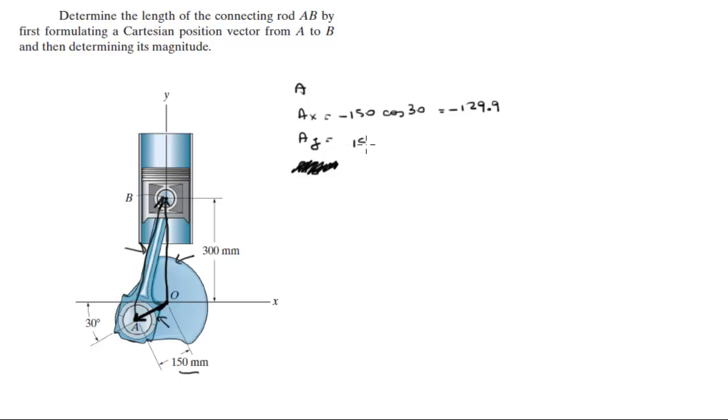The Y component is sine of 30, but it's negative because it's going down towards the negative Y axis, and this is negative 75. So, we get our first vector, negative 129.9 I minus 75 J.